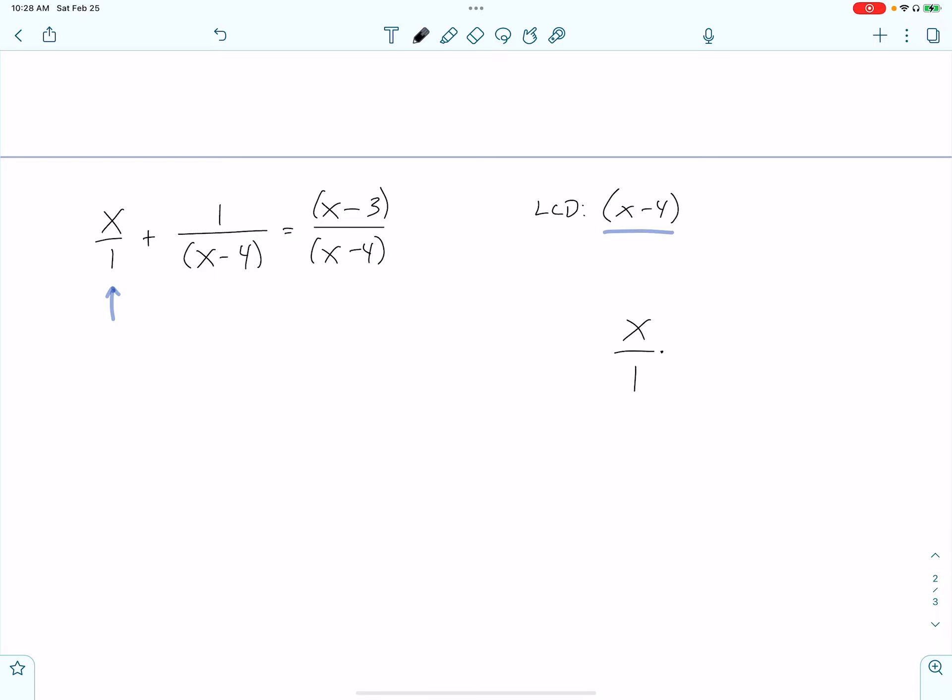Take the X over 1 off to the side, and multiply it by what I need to get to get the denominator of X minus 4, which I know is X minus 4 itself. I've stressed repeatedly that you leave your denominators in factored form, but you FOIL your numerator. There was an X, we're multiplying it by X minus 4, so we actually get a quadratic. X squared minus 4X.